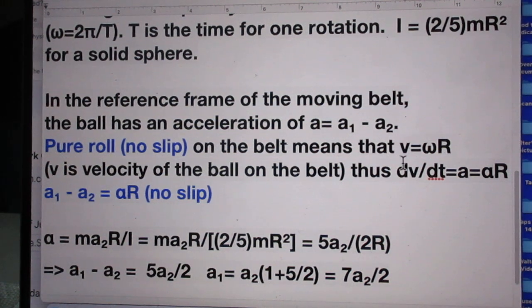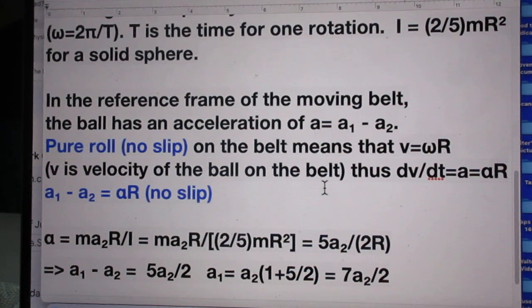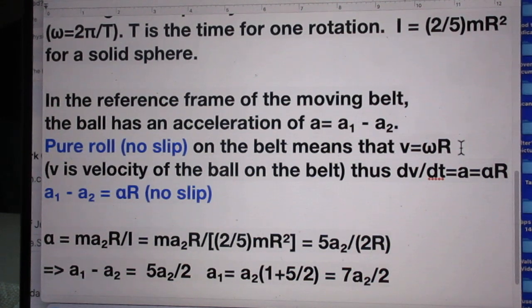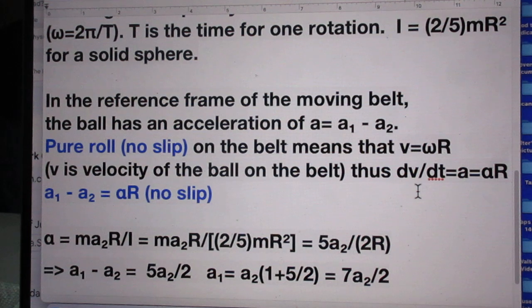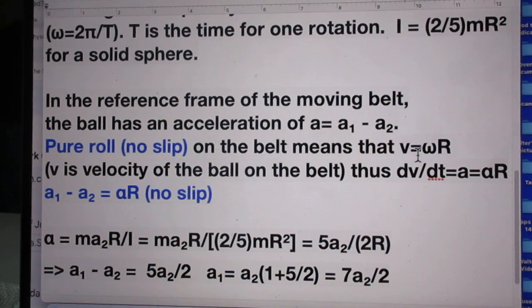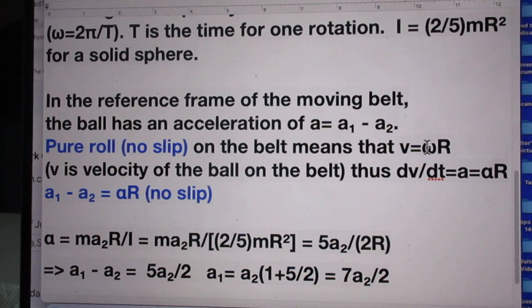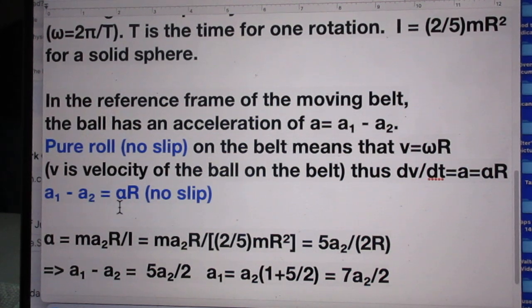No slip on the belt means that v equals ωR. V is the velocity of the ball on the belt. And you should be able to check for yourself why that is exactly pure roll, going back to what I told you just earlier about that point A. The dv/dt is by definition A. And since v equals ωR, for pure roll, A is αR, because alpha is dω/dt. So now we have that A1 minus A2 is αR. That is the no slip condition.